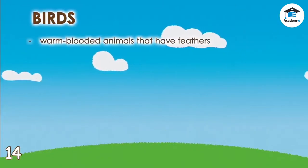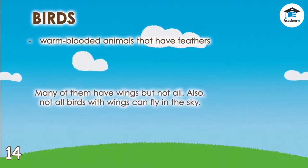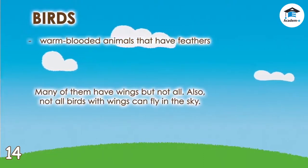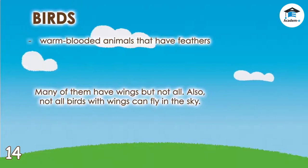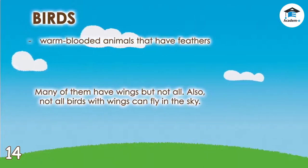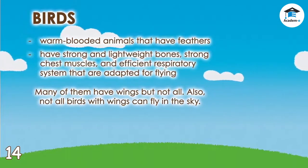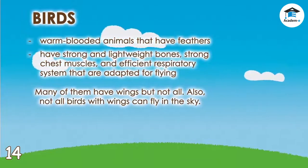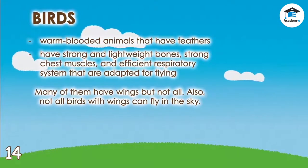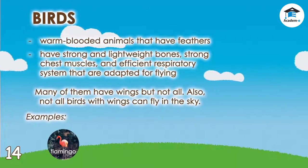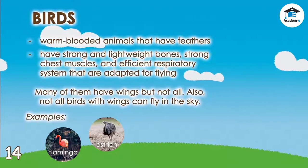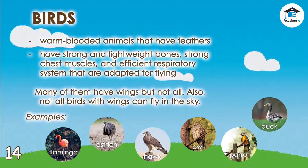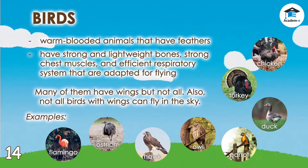Birds are warm-blooded animals that have feathers. Many of them have wings, but not all. Also, not all birds with wings can fly. Birds have strong and lightweight bones, strong chest muscles, and an efficient respiratory system adapted for flying. Birds include flamingos, ostriches, hawks, owls, parrots, ducks, turkeys, and chickens.